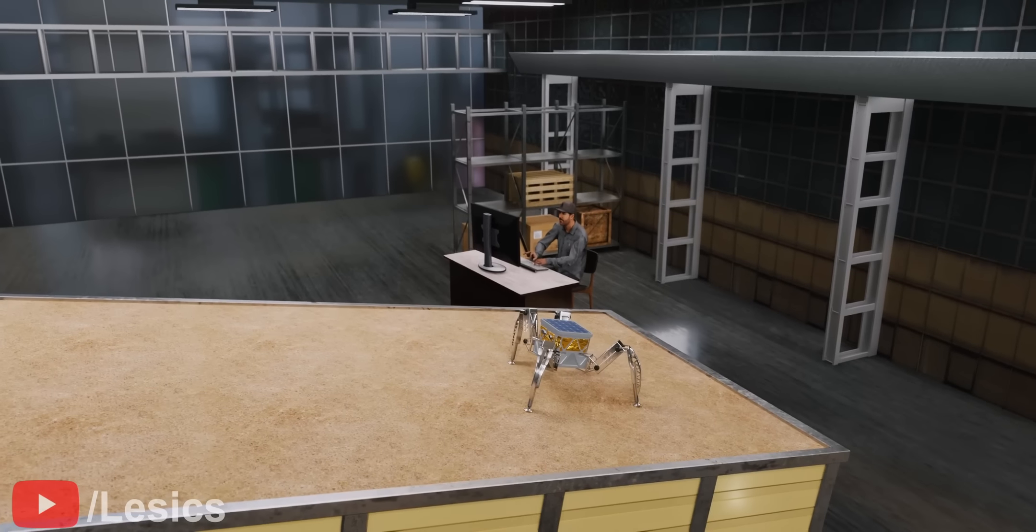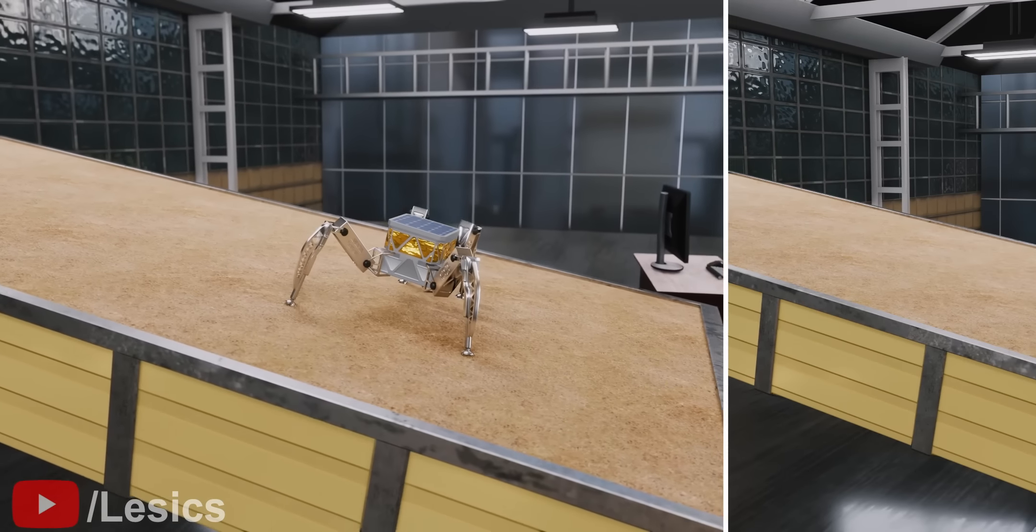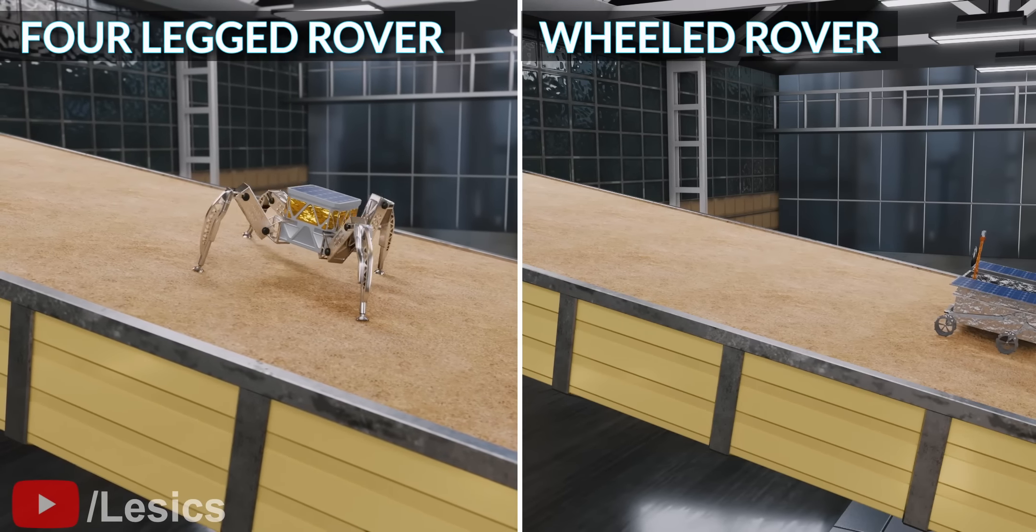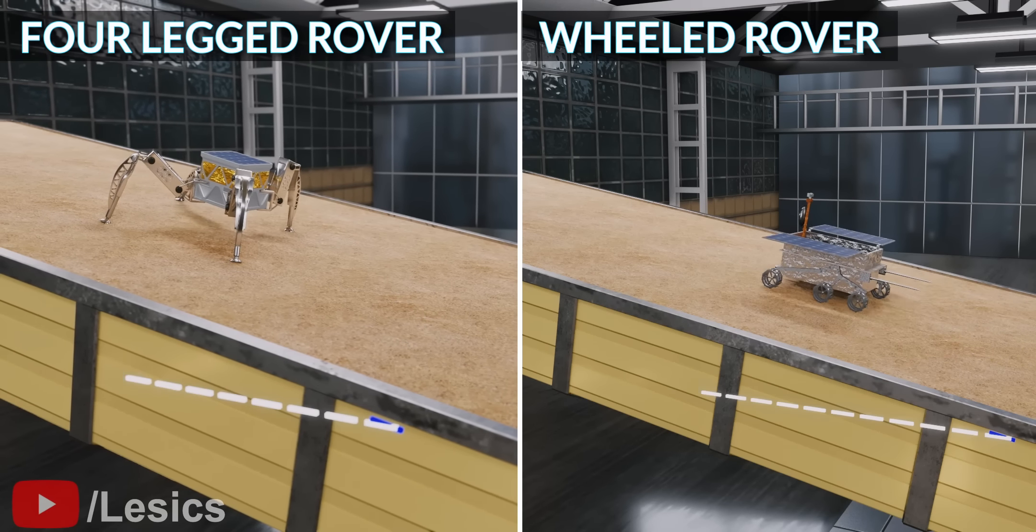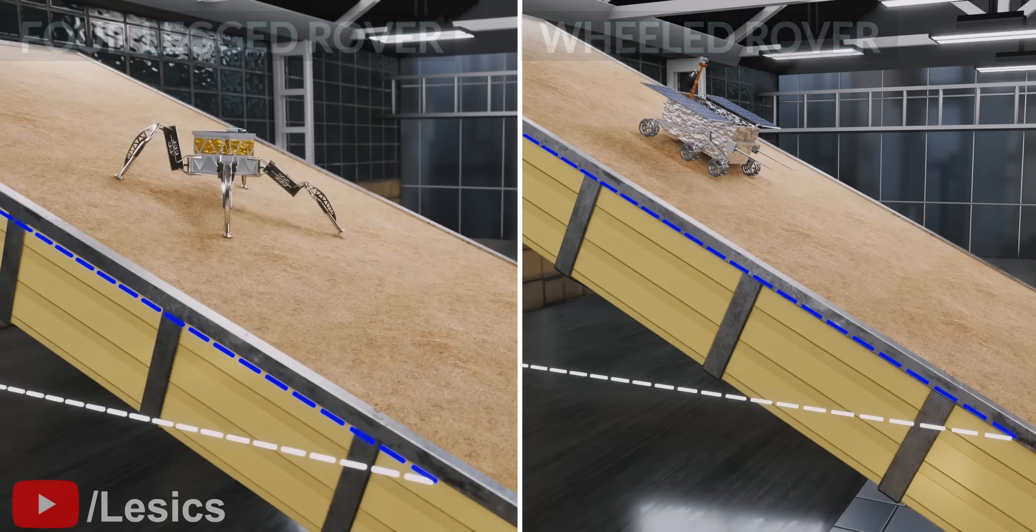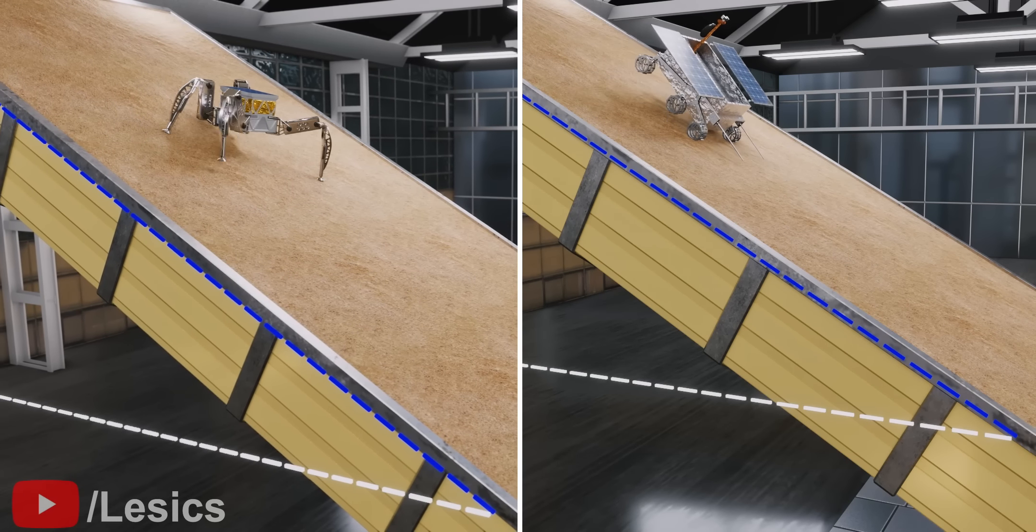Before moving further, let's first examine how these rovers perform on an inclined surface. As you can see, both are moving forward with stability. If the angle of inclination is increased a bit, the wheeled rover will topple while the legged rover will remain stable.